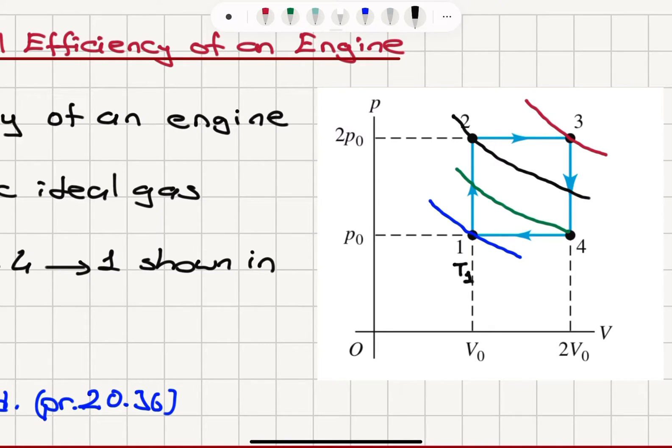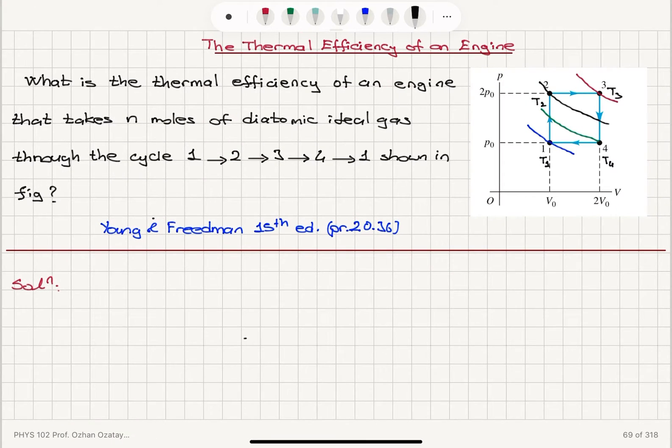and an even higher isotherm would go through point 3. This tells me that temperature at point 1, T1, is the lowest, then T4 is greater, then I have T2 greater, and the highest temperature is achieved at T3. Let's start with this observation: T1 is less than T4, is less than T2, is less than T3.